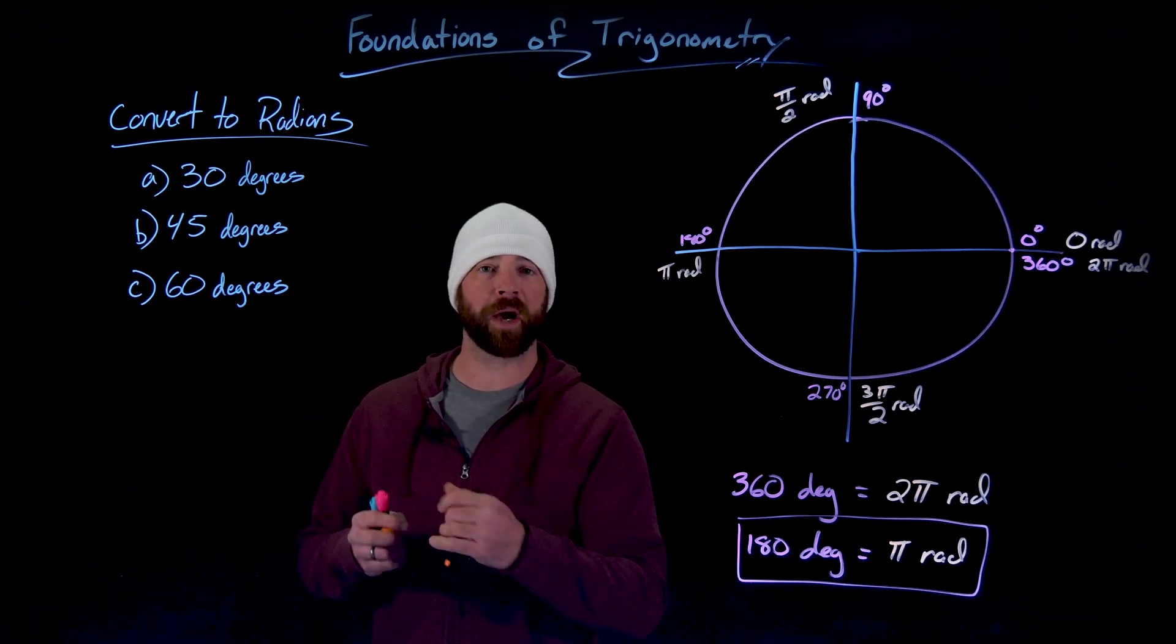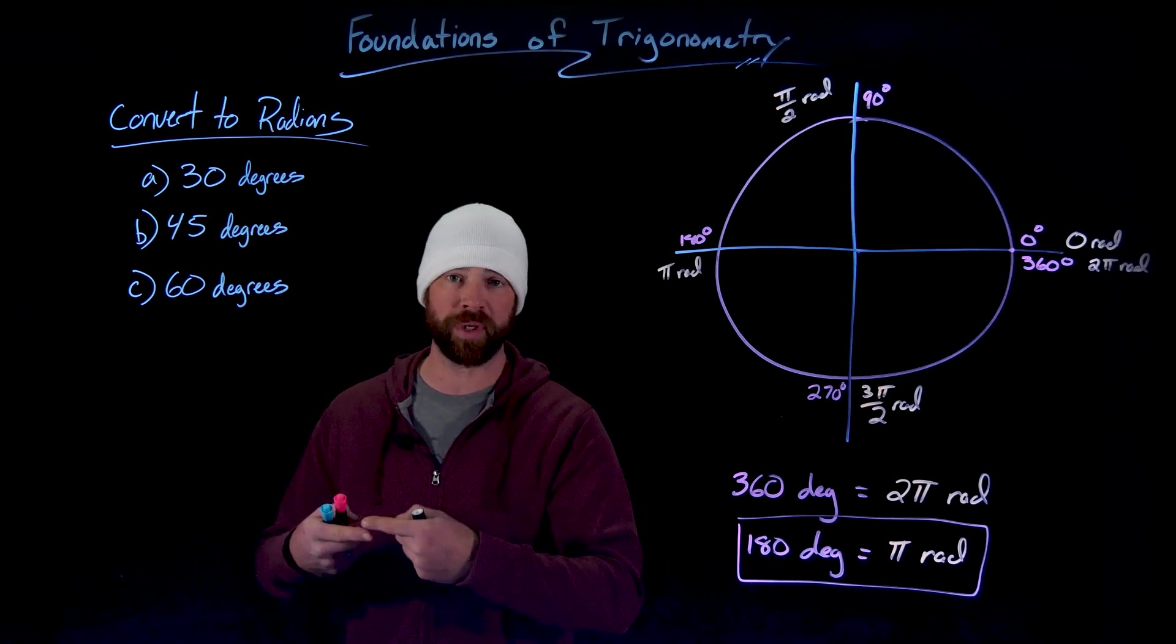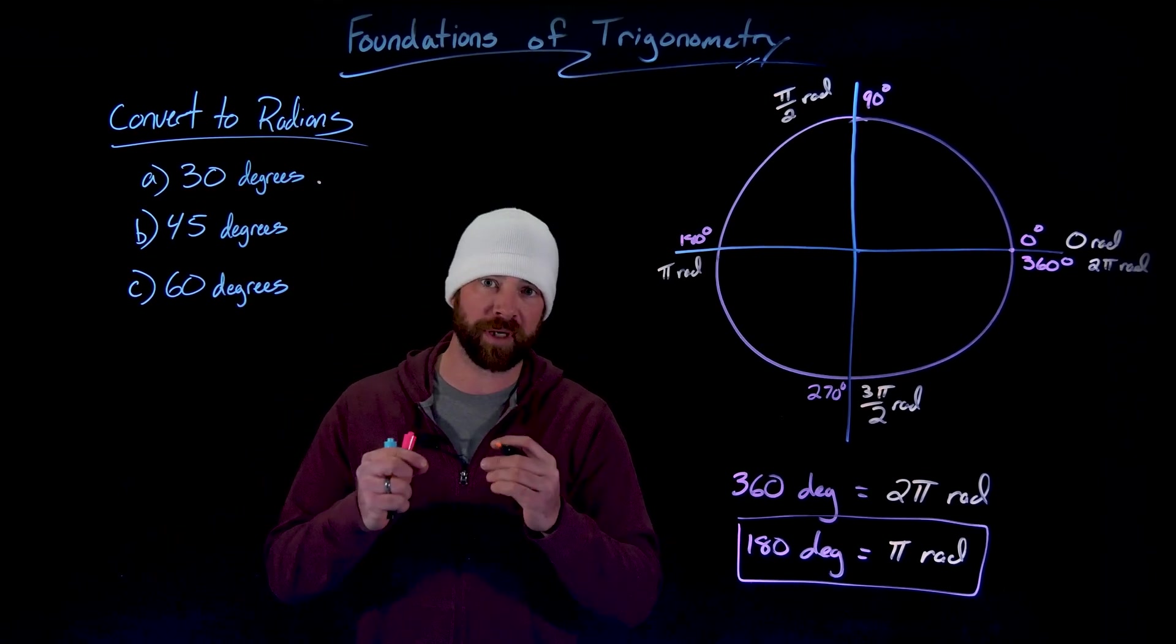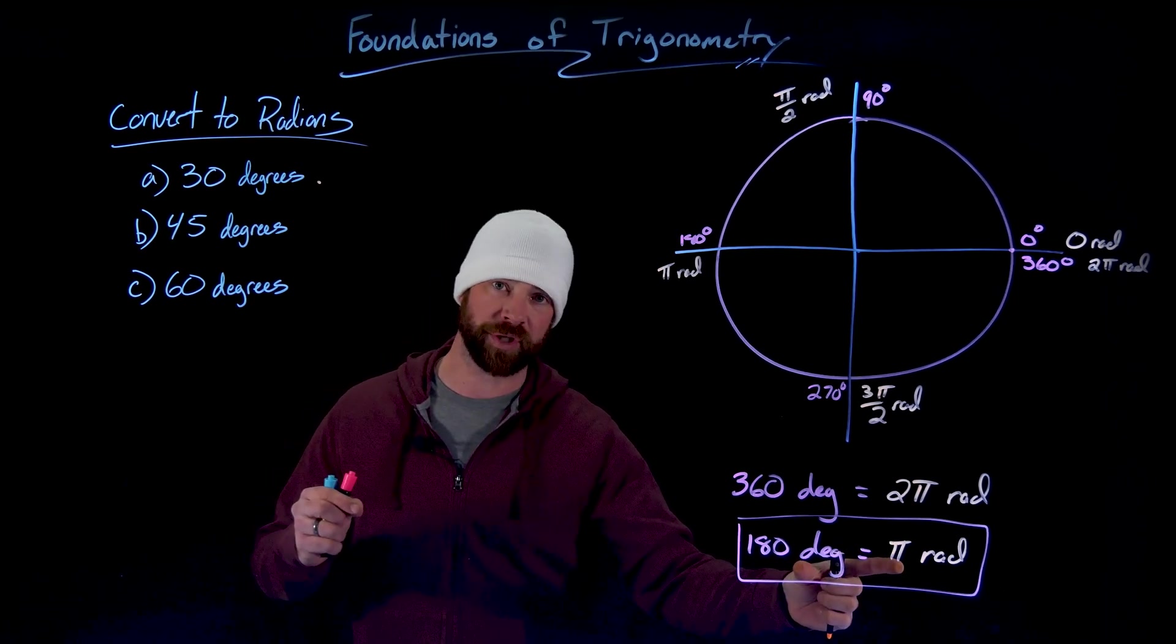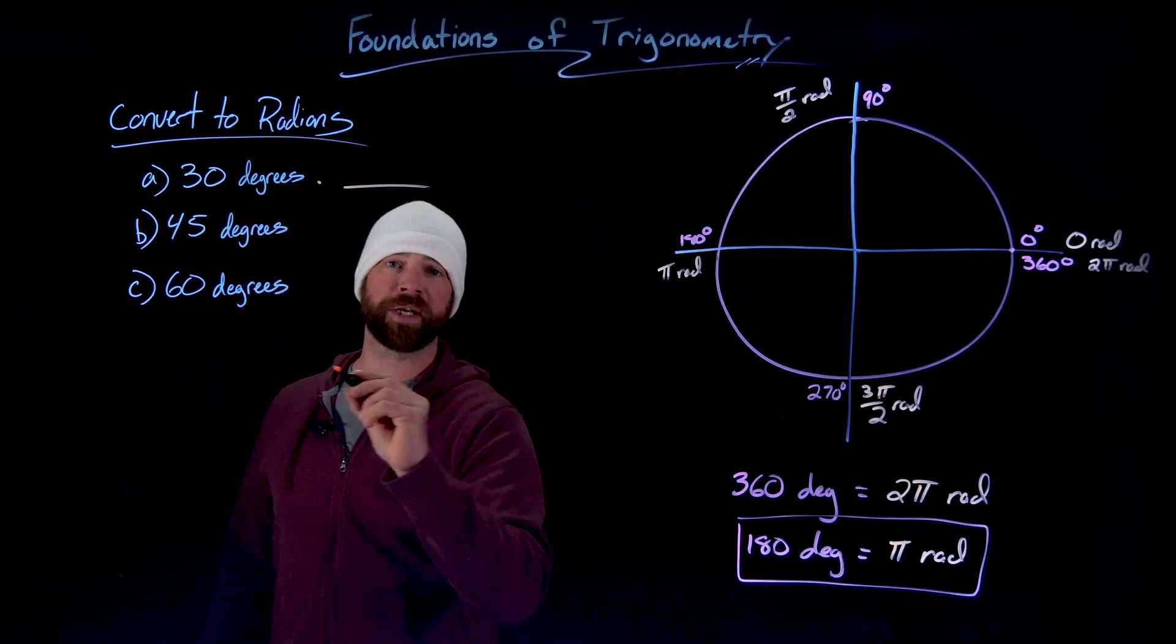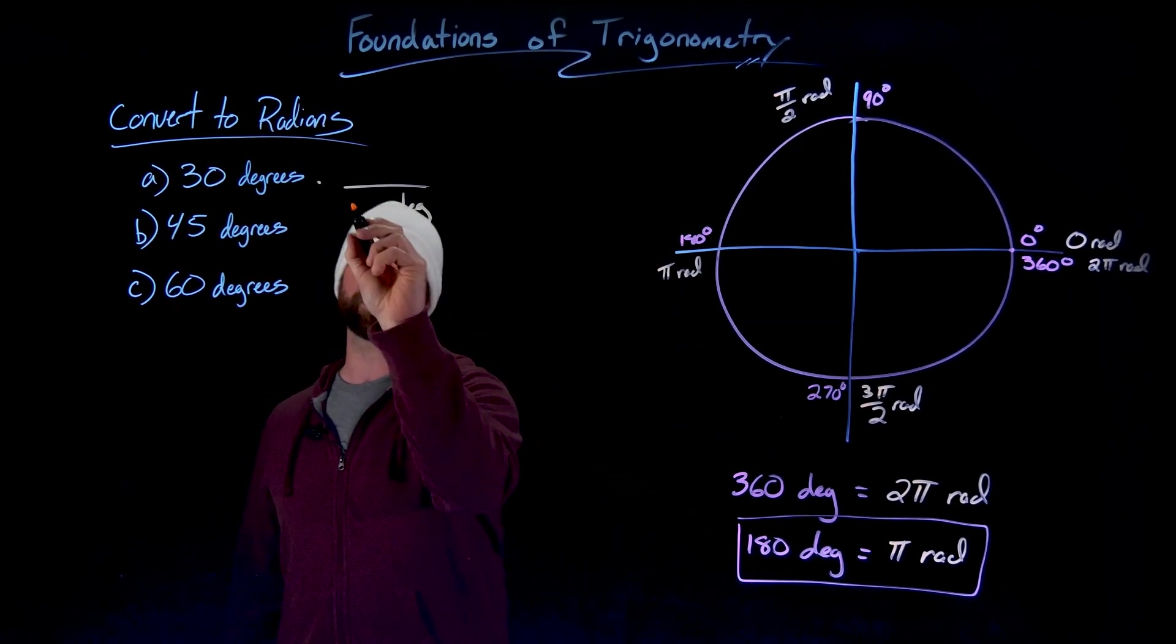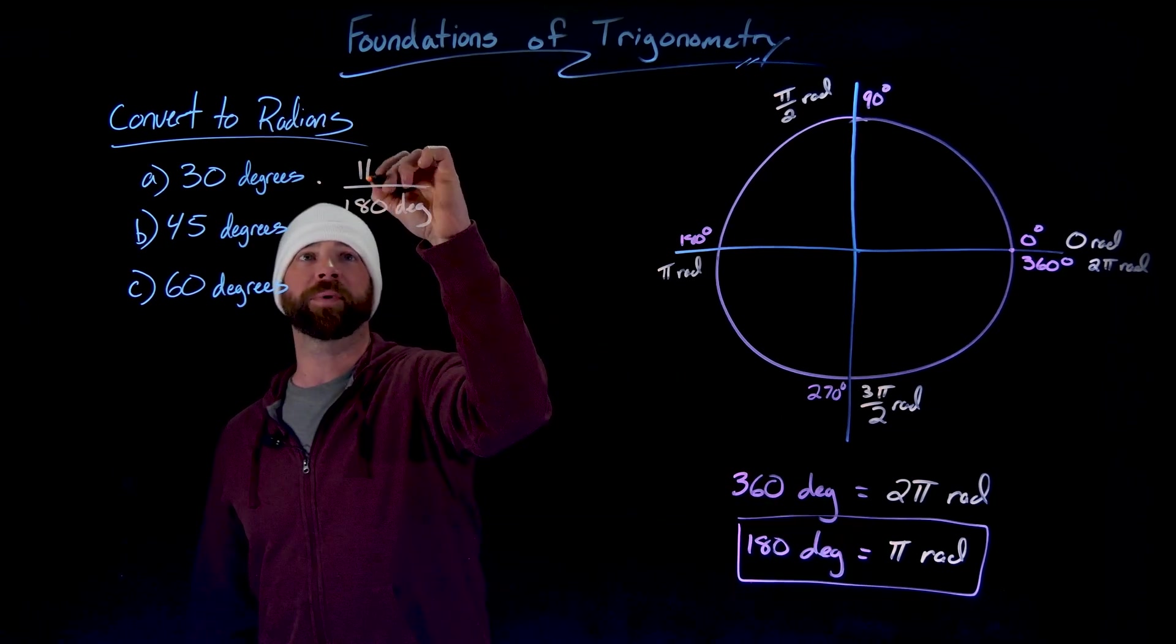But if at any point I want to convert between degrees to radians or radians to degrees, all I need to do is to multiply by the appropriate conversion factor. And in this case right here, I use this relationship. And if I want to take degrees and turn them into radians, importantly, what I do is put the measure for degrees on bottom. So the relationship here is 180 degrees equals pi radians.